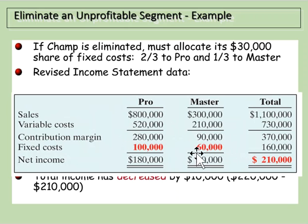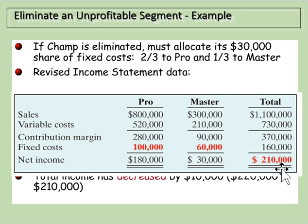Now we've covered all $30,000 of the unavoidable fixed costs left over from Champ. The variable costs go away — that's not an issue. But what happens to our net income? It actually goes down by $10,000, because now our two profitable lines have to absorb the fixed costs from the discontinued line.